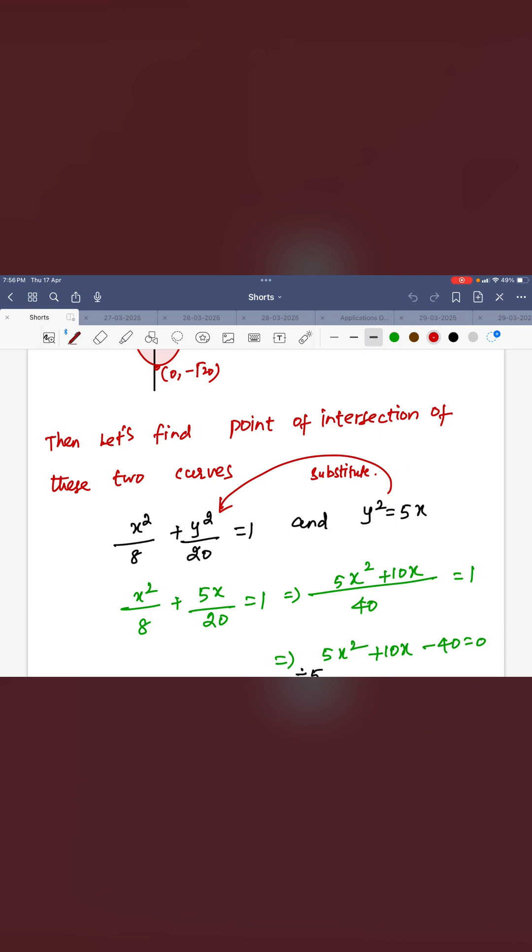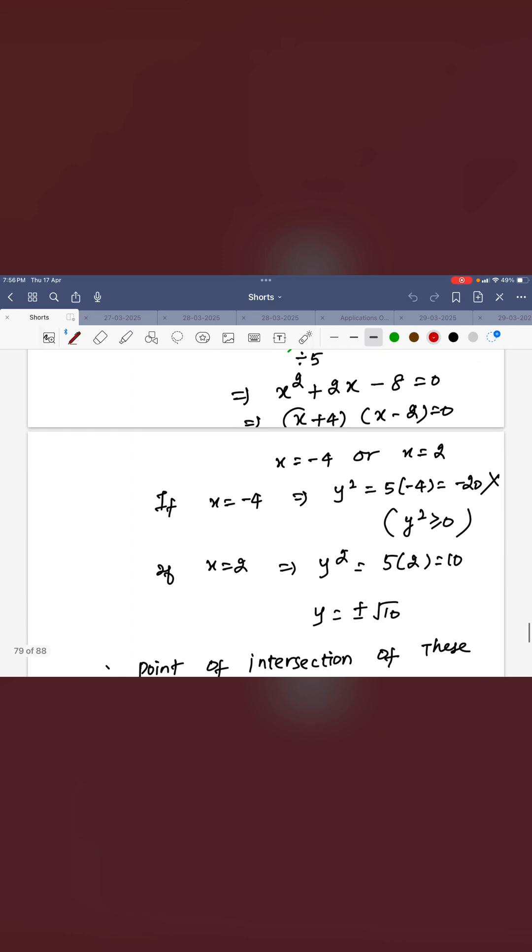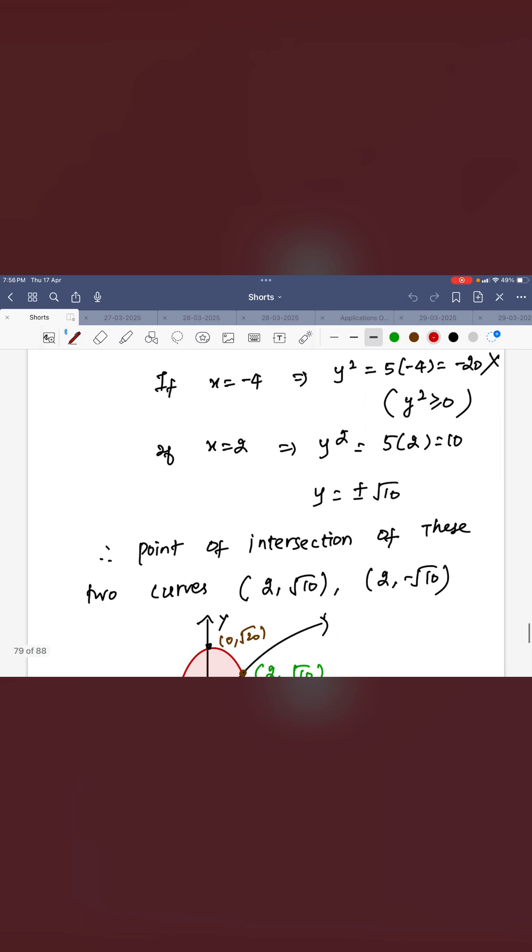There only you can collect all the integers, integer pairs you can collect. You can see x here is minus 4 and 2. Minus 4 not possible, x equal to 2 only possible. You can check it here.